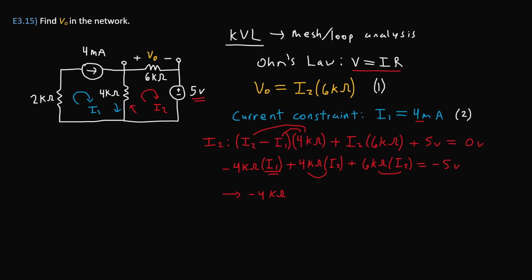Here we can add the two like terms with I₂ and also substitute the value of I₁, which is 4 milliamps. This will end up being negative 4 kilo ohms times 4 milliamps. Then adding the 4 with the 6, we get plus 10 kilo ohms times I₂ equals negative 5 volts.